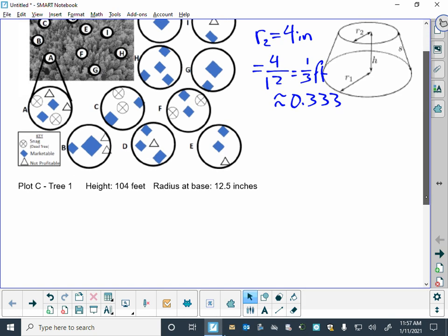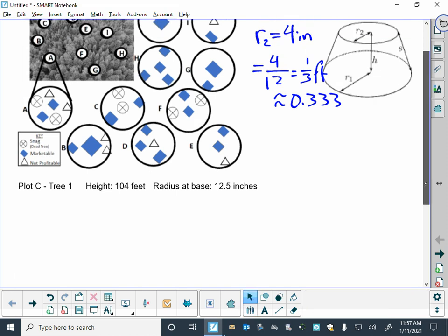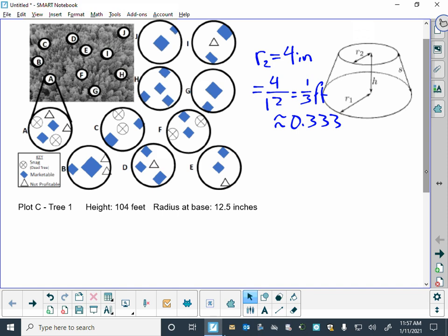So in our first one here, we have information that we have calculated previously. We know we've got a tree that is 104 feet tall, so this is plot C that came out of this section up here, and there were determined to be two marketable trees in there. One of them had a height of 104 feet and a radius at the base of 12 and a half inches.